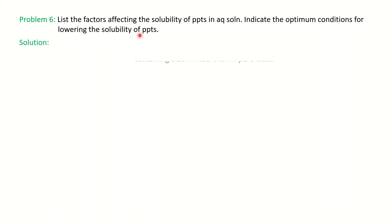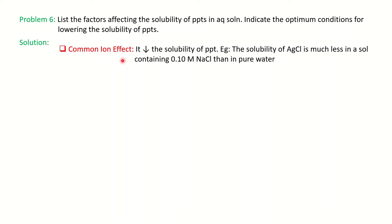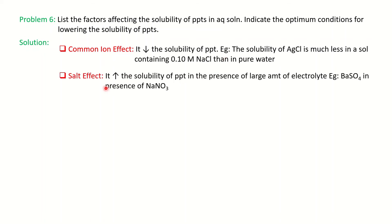The last question: list the factors affecting the solubility of a precipitate in solution and indicate optimum conditions to lower solubility. First is the common ion effect — it decreases the solubility. For example, AgCl in a 0.1 M NaCl solution has lower solubility than in pure water due to the common ion effect. The salt effect increases the solubility of precipitate when electrolytes are present in large amounts — for example, BaSO₄ in the presence of NaNO₃ has increased solubility. To lower solubility, minimize the amount of electrolytes.